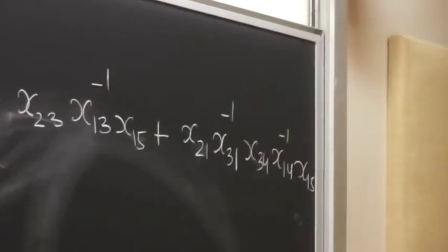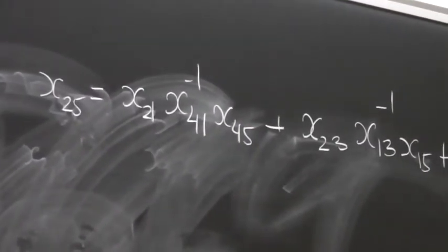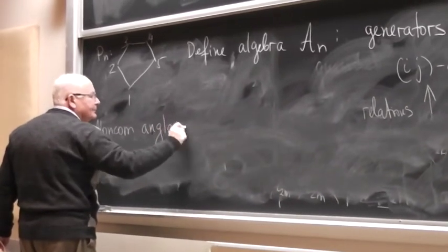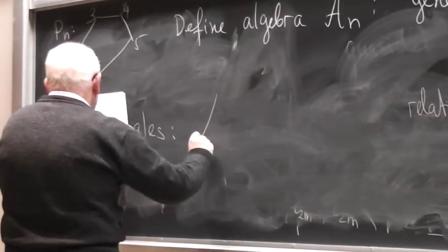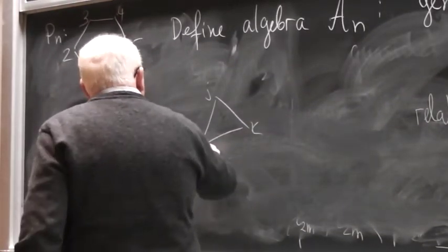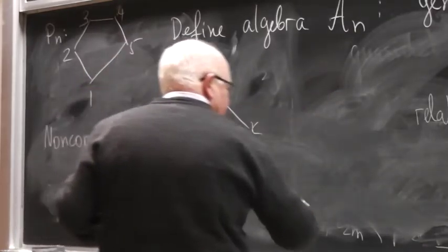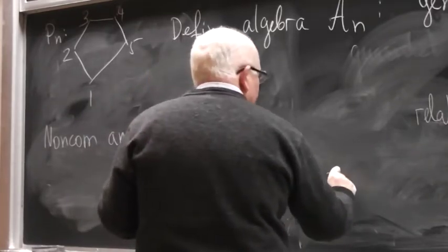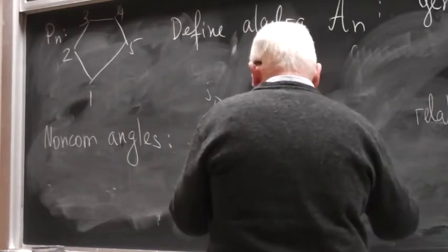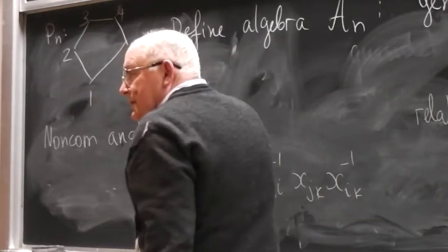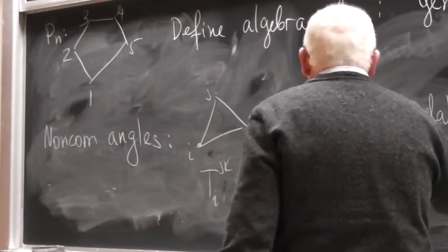Now I believe I have five minutes, so just I need to introduce one more, maybe invariant, which is rather interesting. And so let me talk about non-commutative dependence. What are non-commutative dependence? And the thing is the following, so suppose you have just this triangle i, j, k, and then you consider the following: you have a vertex i, and you consider the following expression, which is xji inverse, xjk, xik inverse. So basically you go from i to j, from j to k, then back here.